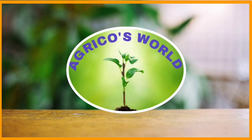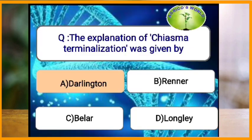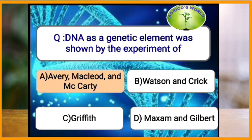Interphase is divided into three phases: G1, S, and G2. G1 and G2 are resting periods, whereas in S phase, chromosomal duplication (DNA replication) takes place. The explanation of chiasma terminalization was given by which scientist? Chiasma terminalization is the movement of the chiasma from synapsis towards the end of the chromosomes, and its explanation was given by Darlington.